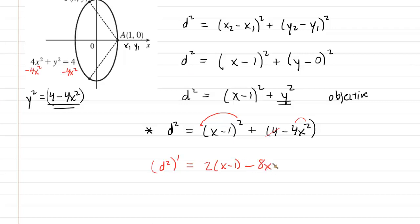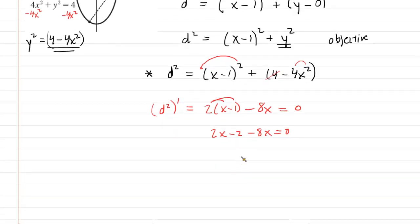Once we have the derivative, we set it equal to 0 and solve for x to find the critical number for our distance squared equation. Distributing the 2, we get 2x minus 2 minus 8x equals 0. Combining like terms gives negative 6x minus 2 equals 0, so negative 6x equals 2, and dividing by negative 6 gives x equals negative one-third. This is our critical number.